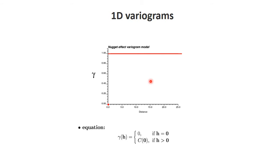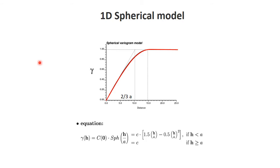The nugget effect model will come in when we talk about nesting variograms — the nugget will simply be seen as one component of the variogram where other structures or components are also available. A very common model is called the 1D spherical model.